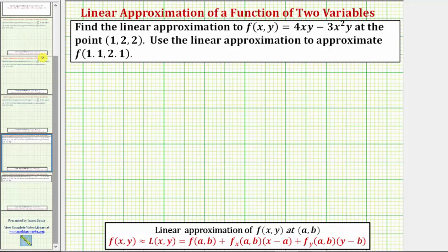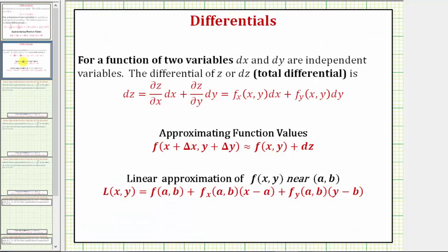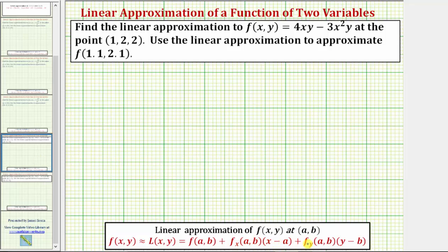Looking back at earlier notes, differential z equals the partial of f times dx plus the partial of f with respect to y times dy, which we see here in our linear approximation. So this is really just the function value at the point of tangency plus differential z — the change of z along the tangent plane.